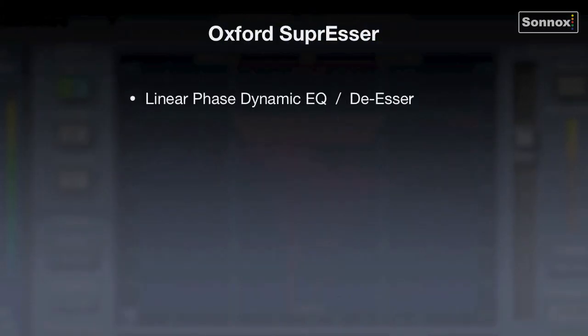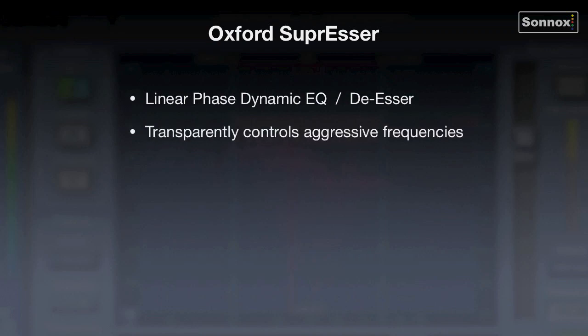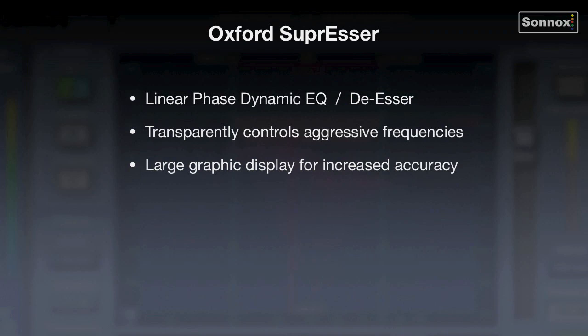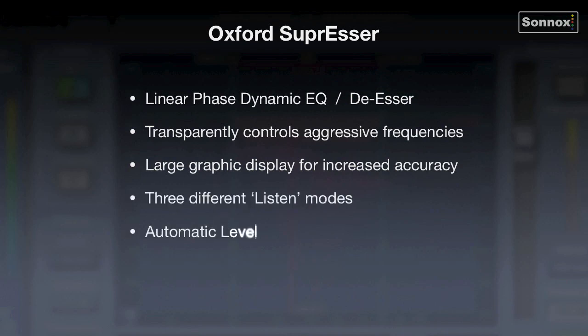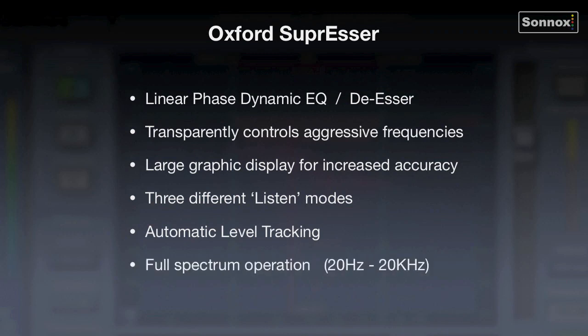So to recap: the Oxford Suppressor is a linear-phase dynamic EQ and de-esser. It transparently controls aggressive frequencies, has a large graphic display for increased accuracy, three different listen modes, automatic level tracking, full-spectrum operation from 20 Hz to 20 kHz, and an advanced mode for ultimate control.